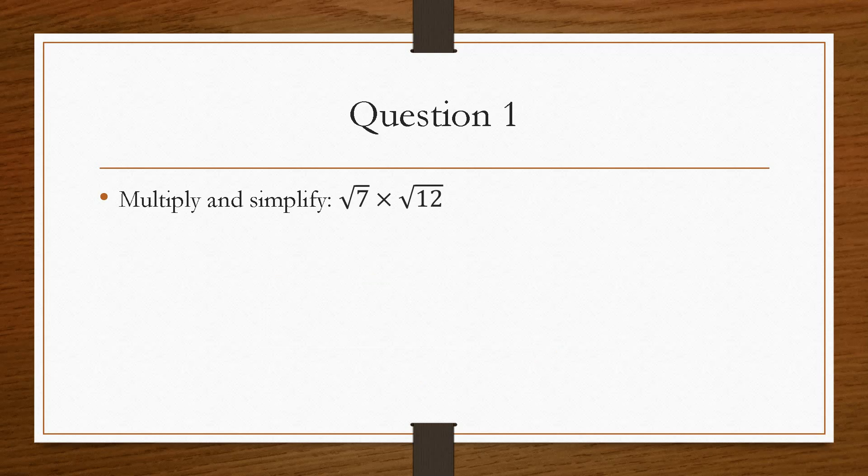So if we take a look at the first question, it asks us to multiply and simplify √7 times √12. So the first thing that we'll do is we've got to multiply the values inside the square root sign directly, just like one of the rules in red boxes. So we just have 7 times 12, which will give us 72.